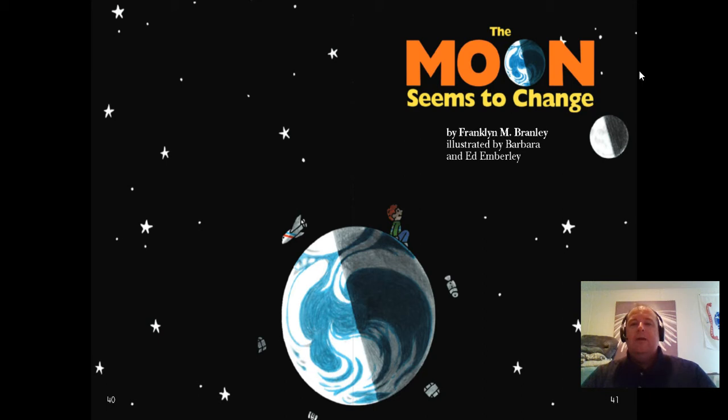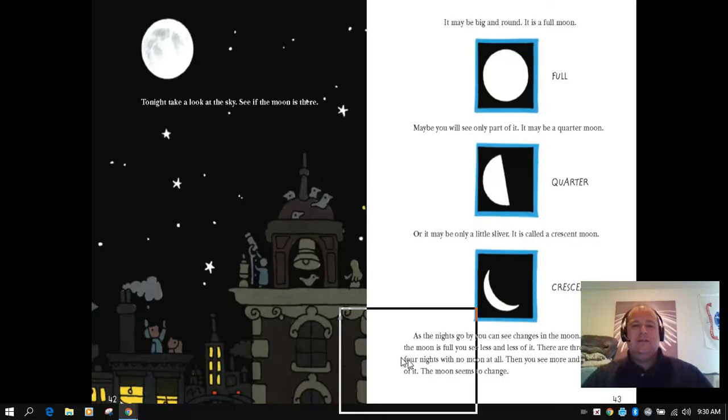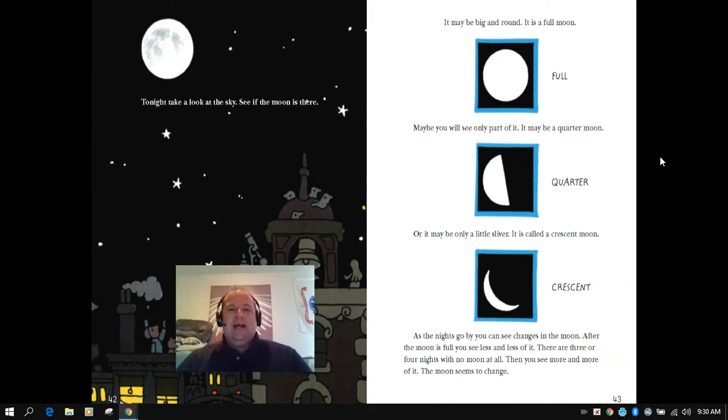Our text today, The Moon Seems to Change by Franklin M. Branley, illustrated by Barbara and Ed Emberley. Have you ever wondered what the moon is all about? Let's read to find out. Tonight, take a look at the sky. See if the moon is there. It may be big and round. It is a full moon. Maybe you will see only part of it. It may be a quarter moon. Or it may be only a little sliver. It is called a crescent moon. As the nights go by, you can see changes in the moon. After the moon is full, you see less and less of it. There are three or four nights with no moons at all. Then you see more and more of it. The moon seems to change.